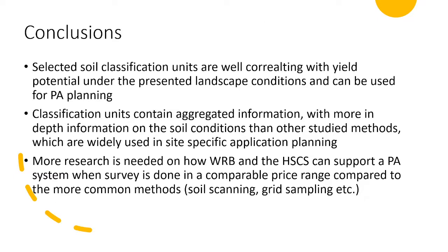Based on the results, we can conclude that the selected soil classification units are well-correlated with yield potential under the presented landscape conditions and can be used for precision agriculture planning. Classification units contain aggregated information with more in-depth detail on the soil condition than other studied methods widely used in site-specific application planning. More research is needed on how the WRB and the Hungarian soil classification system can support a precision agriculture system when surveys are done at a comparable price range to more common methods like soil scanning and grid sampling.